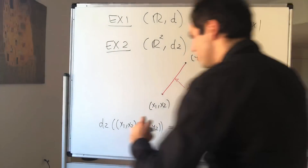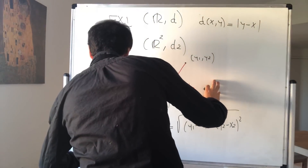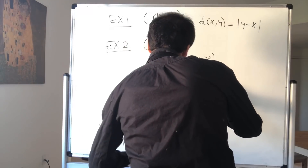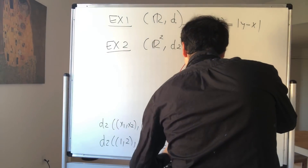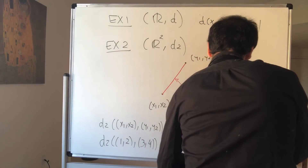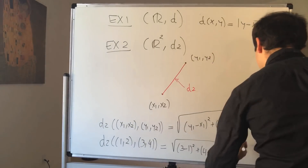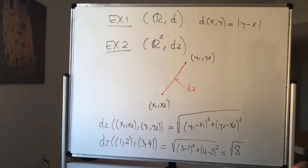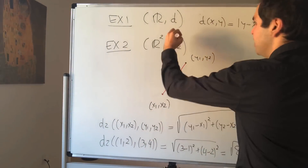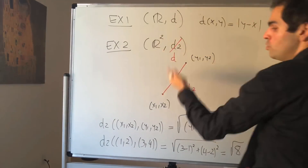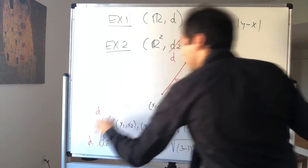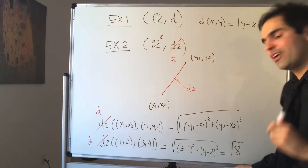Just the usual distance. For instance, d₂ of (1, 2) and (3, 4) is just the square root of (3 − 1)² + (4 − 2)², which I believe is √8. We'll use this distance function so much that from now on we'll often just call it d, though I'll write the subscript 2 to distinguish it from other distance functions.